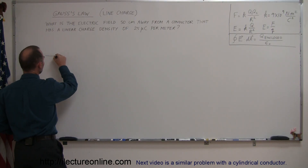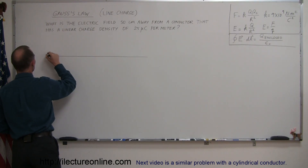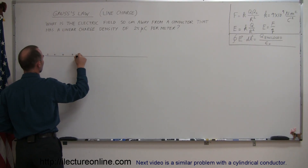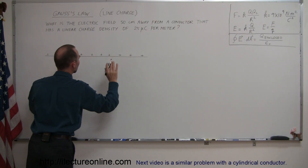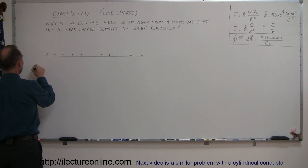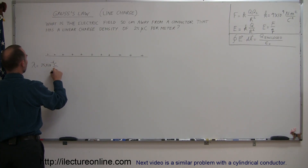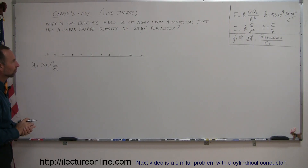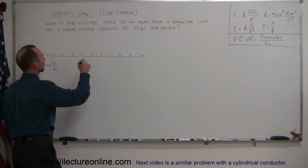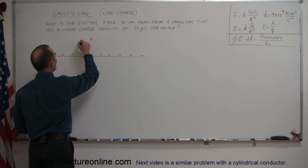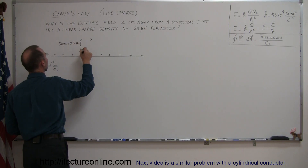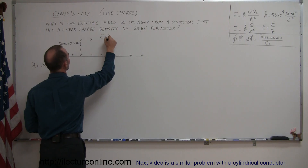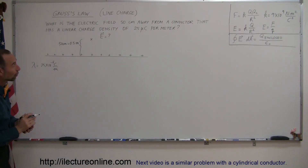Let's draw a picture. Assume that we have a conductor that contains a certain amount of charge. Assuming there's no current on the conductor, so the charge is stationary, we can indicate that the charge density is equal to 25 times 10 to the minus 6 coulombs per meter. That's the symbol for charge density per unit length. At some distance — 50 centimeters, which is the same as 0.5 meters — what is the electric field at this location? We'd like to know the magnitude and the direction of that field.